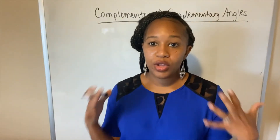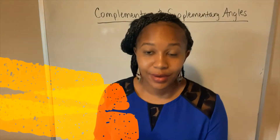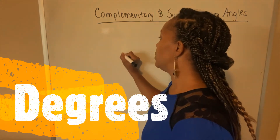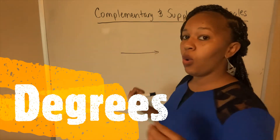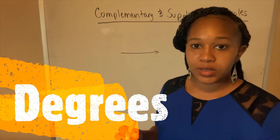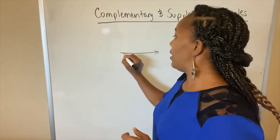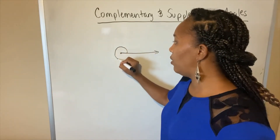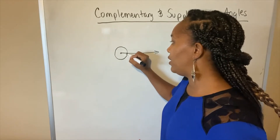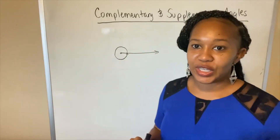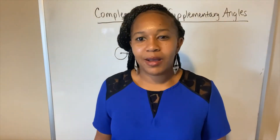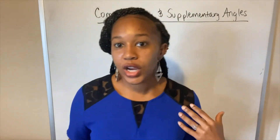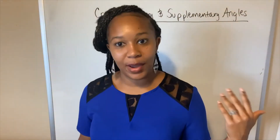The most common unit of measurement for angles is degrees — I'm sure you've heard of that. We'll learn a new measurement later in this course, but for now the most common measurement is degrees. If this is my initial side and I start here, come all the way back around, and stop where I started, that's a 360-degree angle. Sometimes people say 'they made a 360,' but that actually means you started, turned all the way around, and stopped right back where you started.